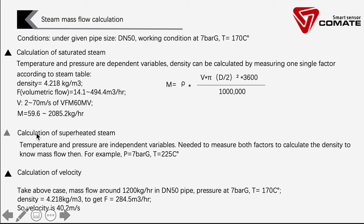We check the steam table and confirm this is under saturated steam status. So we know the density value from the table, and we can calculate the volume flow rate in this range. Velocity here is referenced to the Comet multivariable vortex flow meter. We can then get the mass flow rate range that the vortex flow meter can cover. Because temperature and pressure are independent variables in superheated steam, we are required to measure both factors to calculate the density and determine the mass flow rate. We can also calculate the velocity to find the most suitable technology for your system.